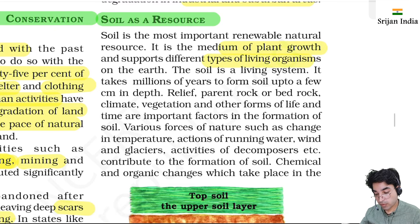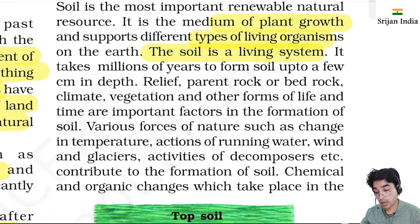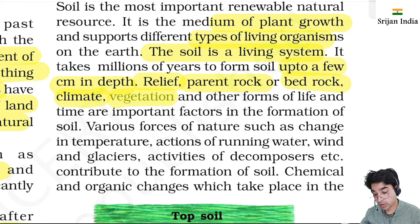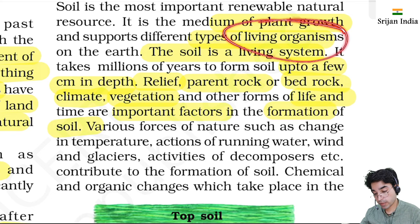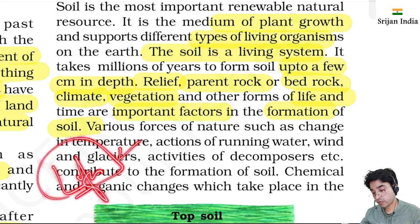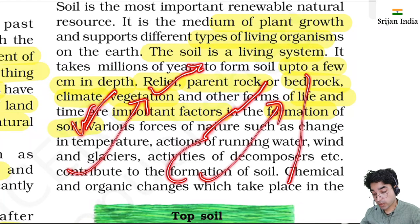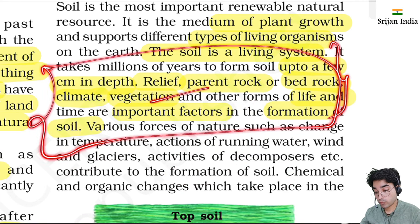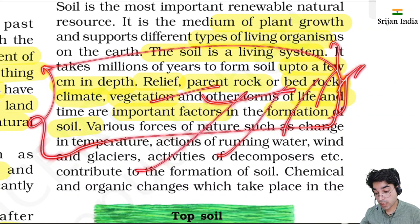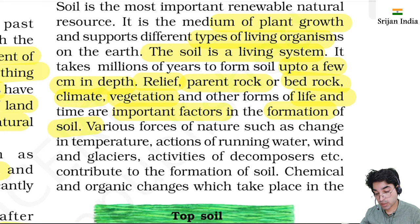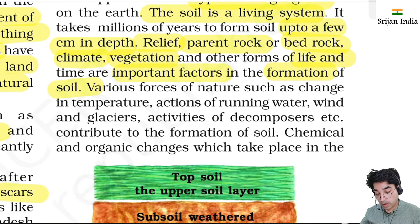Many ways exist to solve land degradation: the best method is afforestation - more trees should be planted. Proper management of grazing, shelter belts for plants, stabilizing sand dunes, thorny brushes - these check land degradation in arid areas. The desert also advances, so it must be stopped. Soil is a living system - it has profiles and layers that form over millions of years. Factors affecting soil formation: relief, parent rock/bedrock, climate, and vegetation decide the type of soil. Forces of nature - change in temperature, running water, wind, glaciers, decomposers - all contribute to soil formation.